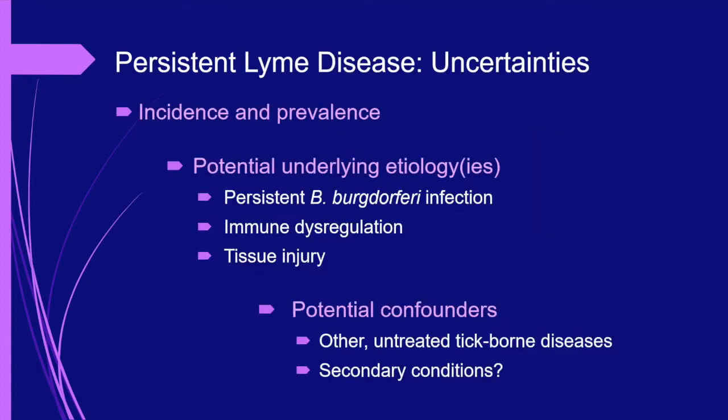At this point, we know the following: persistent Lyme disease exists; the presence of specific symptoms and symptom severity varies widely; and several situations can predispose patients to developing this condition. However, there are several important unknowns. Although it is often stated that 10–20% of patients treated for Lyme disease will have ongoing symptoms following therapy, that data is based on patients who were treated early in the infection. The rate is higher when patients present with disseminated disease and antibiotic therapy is delayed. Thus, if all Lyme disease patients are included, it is likely that the incidence of persistent Lyme disease would be higher.